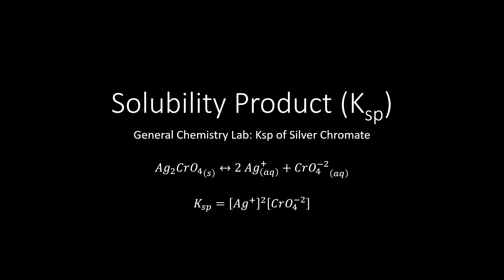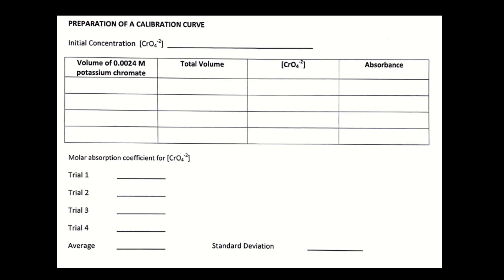Here we're going to be looking at the general chemistry lab data sheet for the Ksp, or solubility product, of silver chromate. For the first part, you'll be taking known concentrations of the chromate ion and getting absorbance values from your spectrophotometer. You'll use that to essentially determine a molar absorption coefficient for the chromate ion.